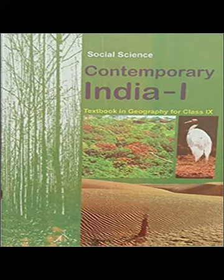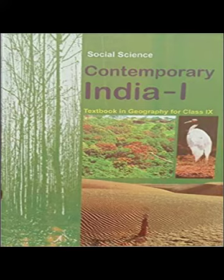Mangrove forests — the mangrove tidal forests are found in the areas of coasts influenced by tides. Mud and silt get accumulated on such coasts. Dense mangroves are the common varieties, with roots of the plants submerged under water. The deltas of the Ganga, the Mahanadi, the Krishna, the Godavari and the Kaveri are covered by such vegetation. In the Ganga-Brahmaputra delta, Sundari trees are found, which provide durable hard timber. Palm, coconut, kauri, agar, etc., also grow in some parts of the delta. The Royal Bengal tiger is the famous animal in these forests. Turtles, crocodiles, gharials and snakes are also found here.